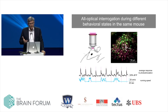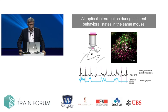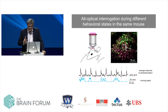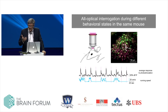We can perform this interrogation during different behavioral states. In a head-fixed mouse imaging barrel cortex while the animal runs on a styrofoam treadmill, we can interrogate the same neurons and examine how responsiveness to the same stimulation pattern changes during different behavioral states — for example, while the animal is at rest versus running. We can show that the gain of the neuron to a particular stimulus is enhanced while the animal is running.